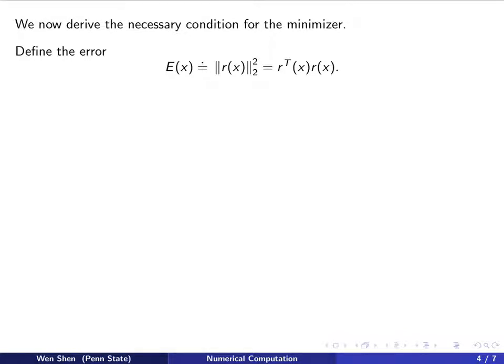We now derive the necessary condition for the minimizer. Let's define the error E as a function of x will be just the square of the residual, which is the transpose of the residual vector times itself.